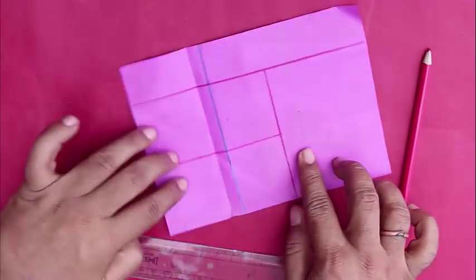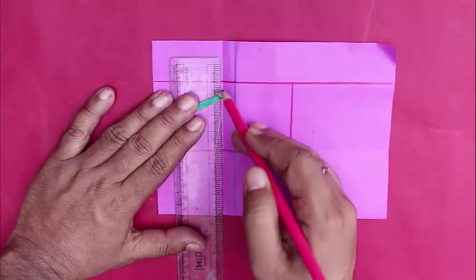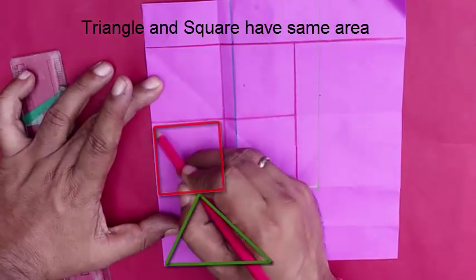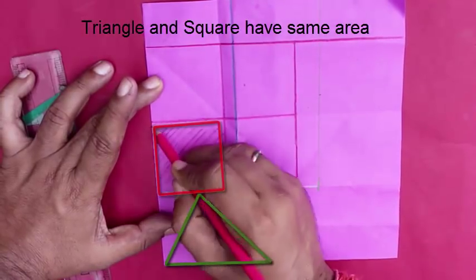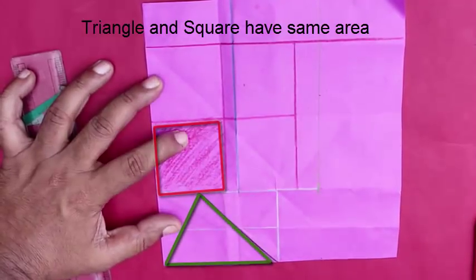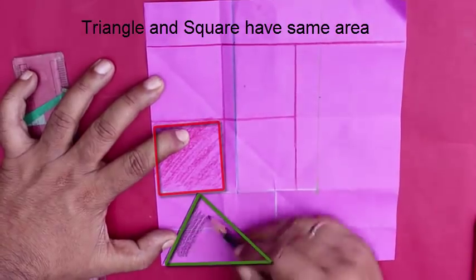This smaller square that we get has the area a times b, which is same as that of our triangle. So we have converted a triangle to a square. Thank you.